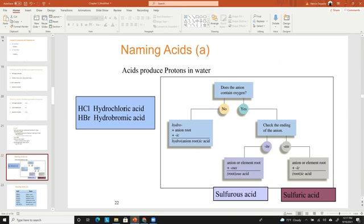For HCl it would be hydrochloric acid, for HBr hydrobromic acid, for HI hydroiodic acid. For anions that do have an oxygen in them you use either the -ite ending or the -ate ending.